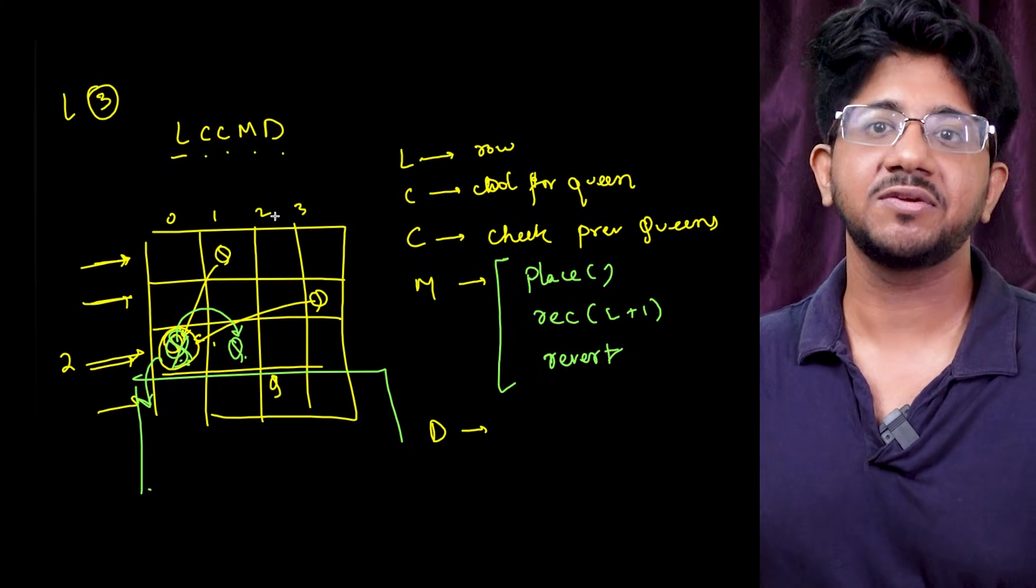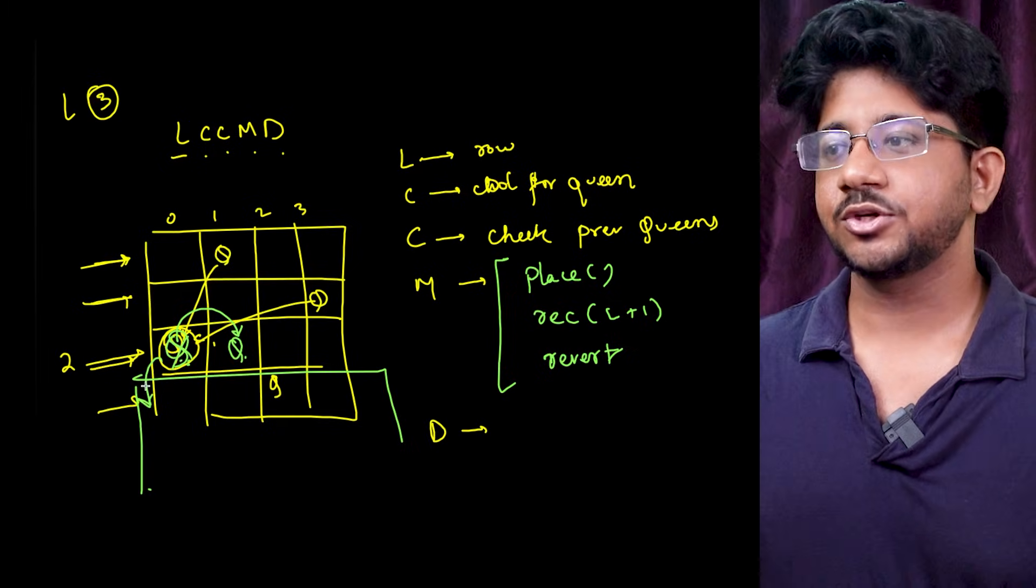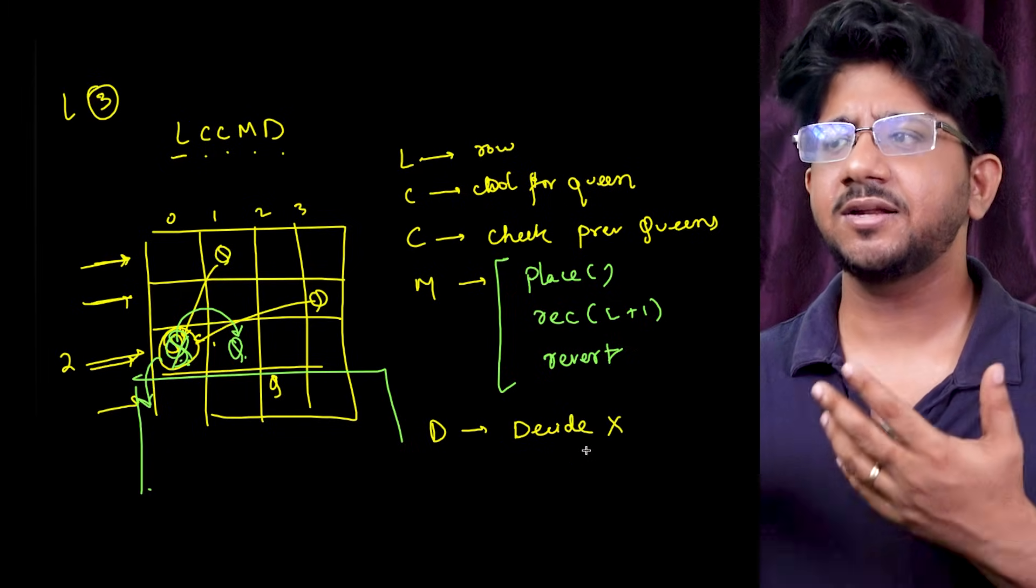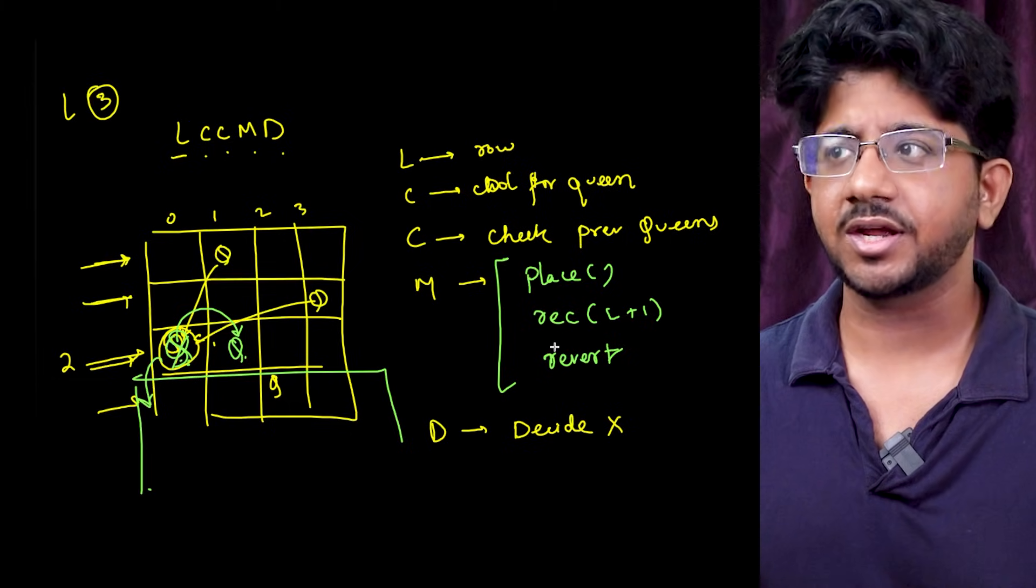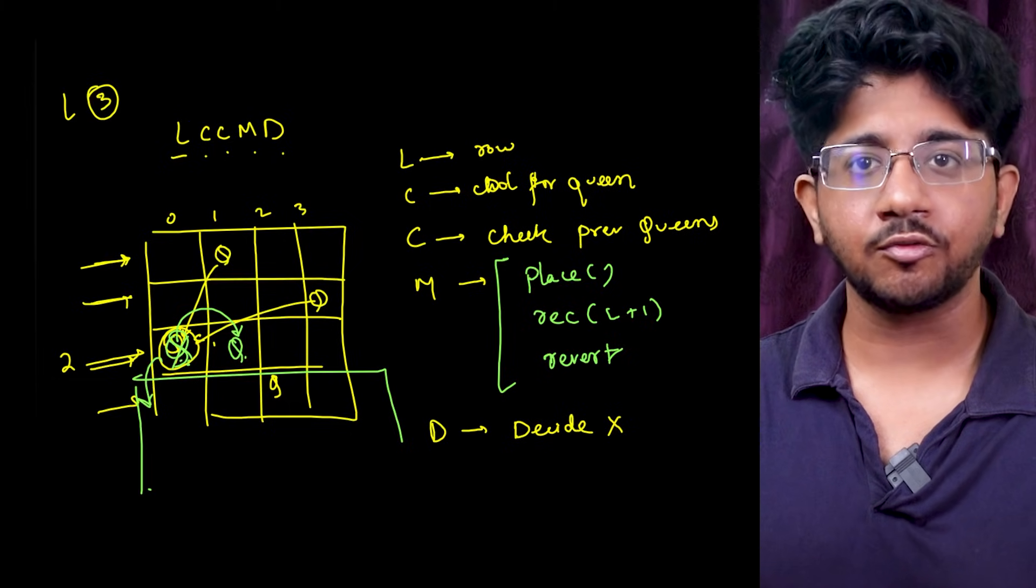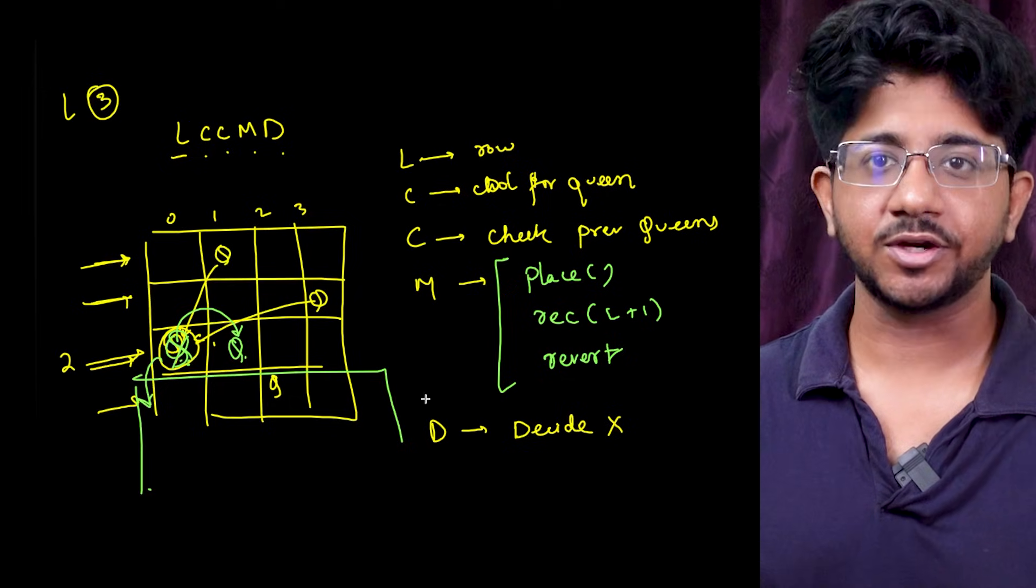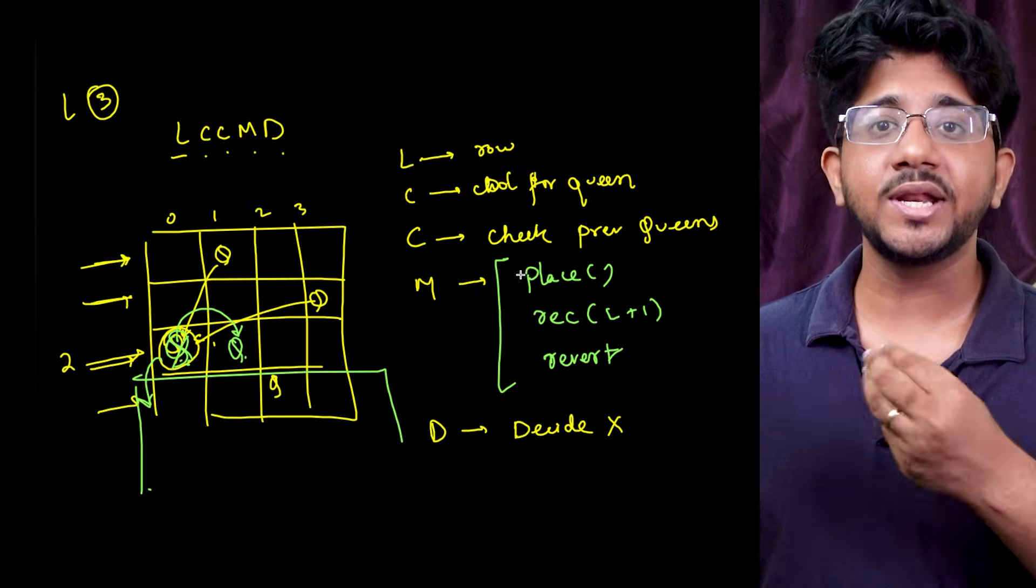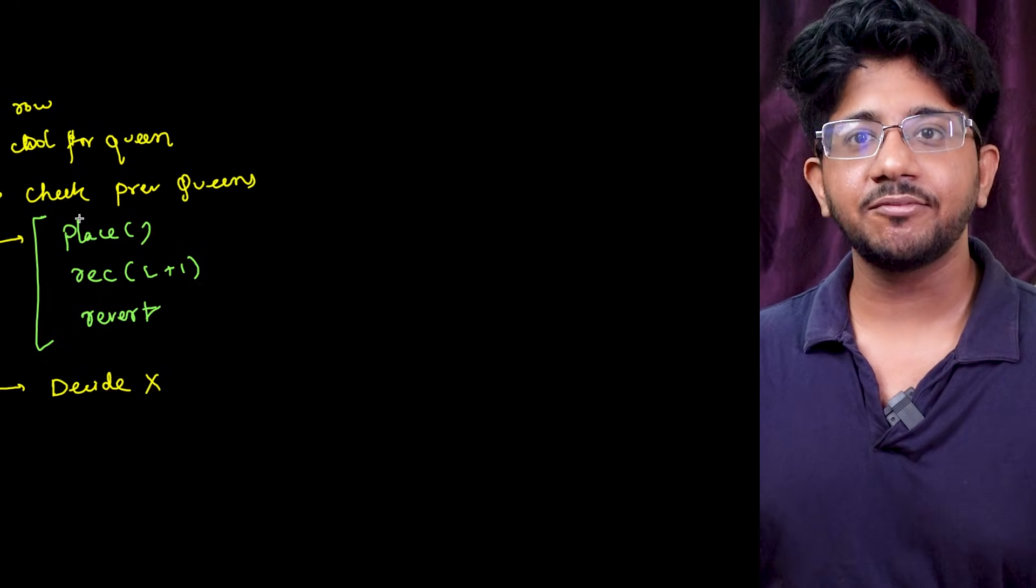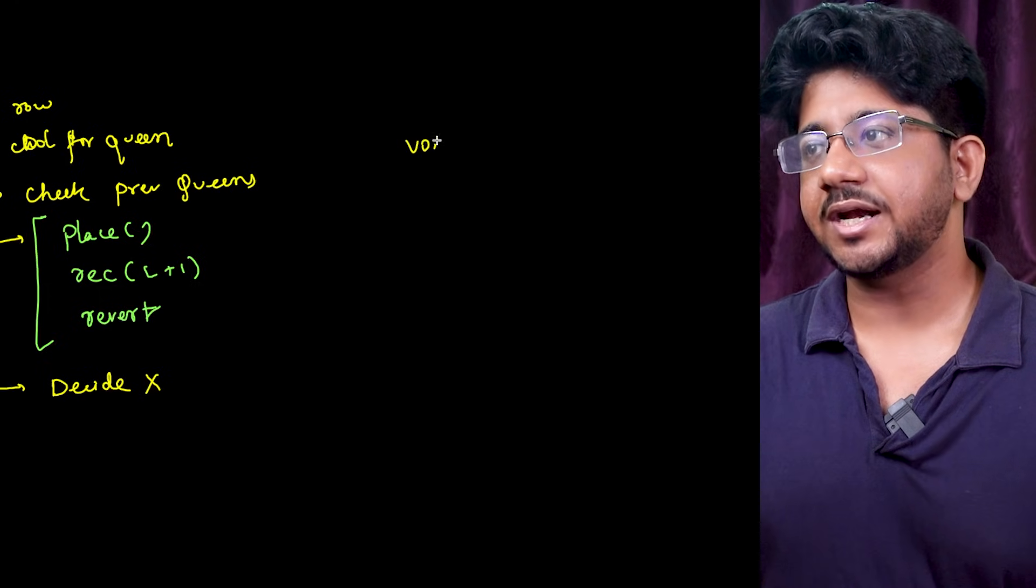So this is the simple framework and once you place everything if you want you can at the end d decide whether whatever you have generated is correct or not. So in this case since we are only placing queens at valid places you don't really need to decide but this would be how you would apply this framework. And once you have this you can actually go ahead and solve a lot of problems directly with this framework. For an example it makes your coding as easy as well.